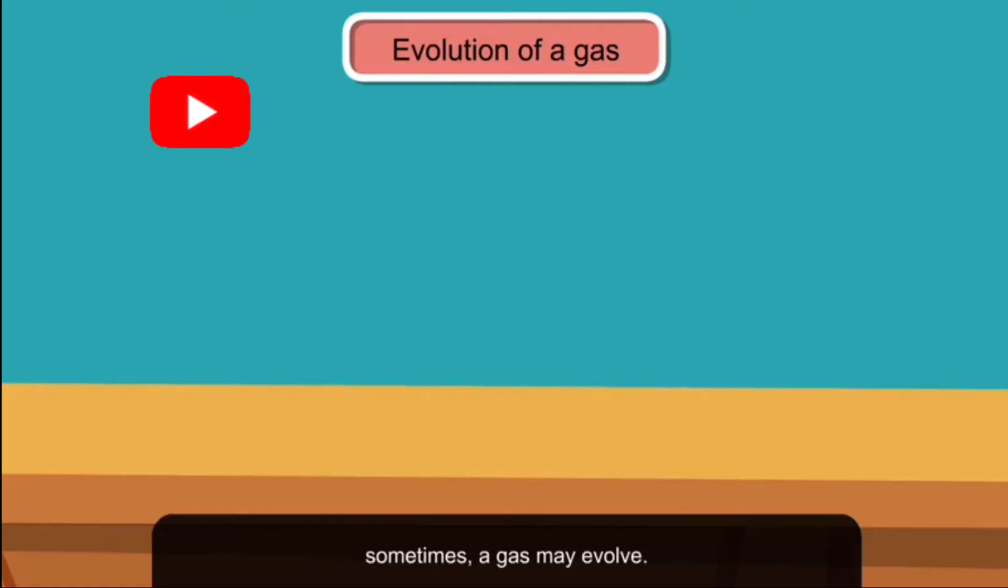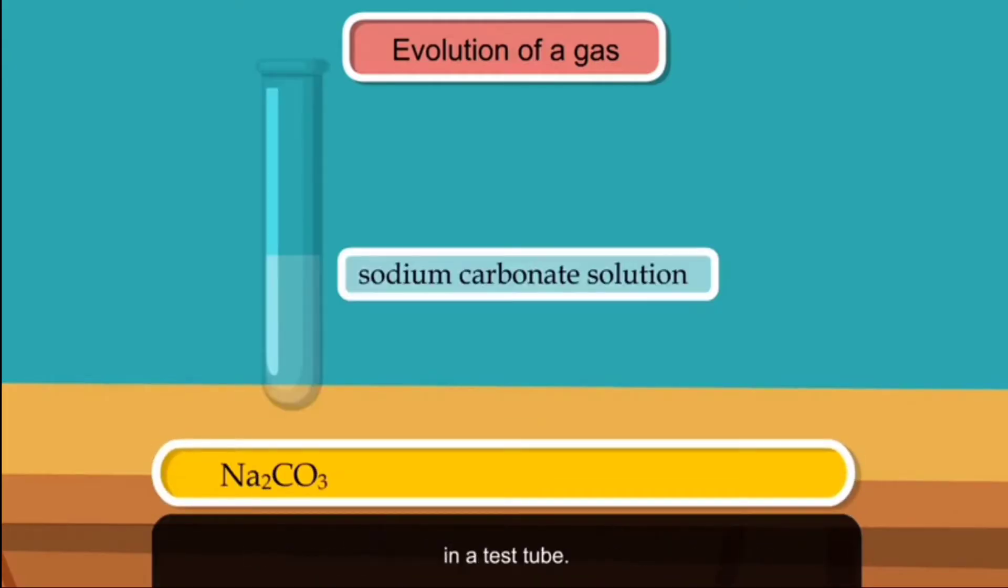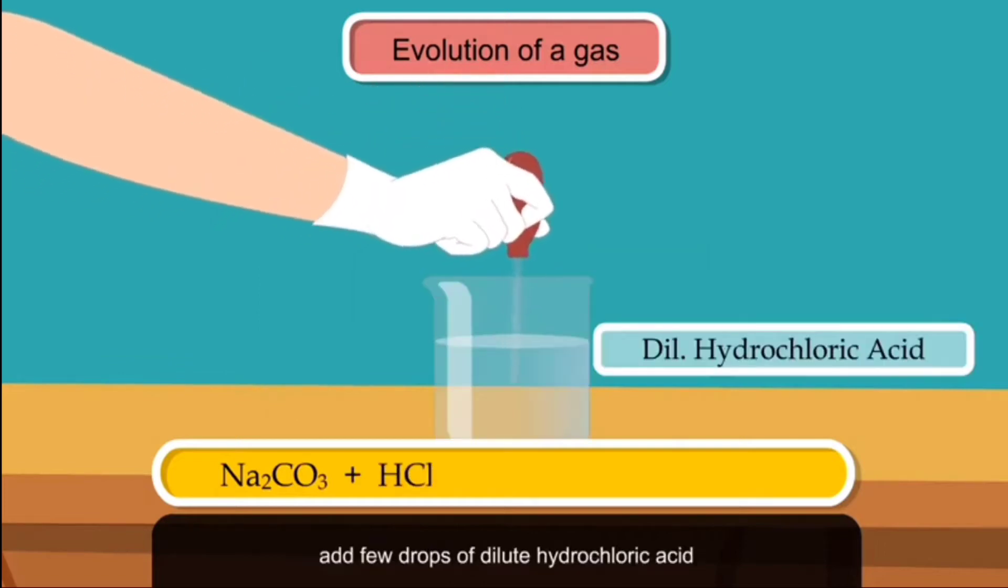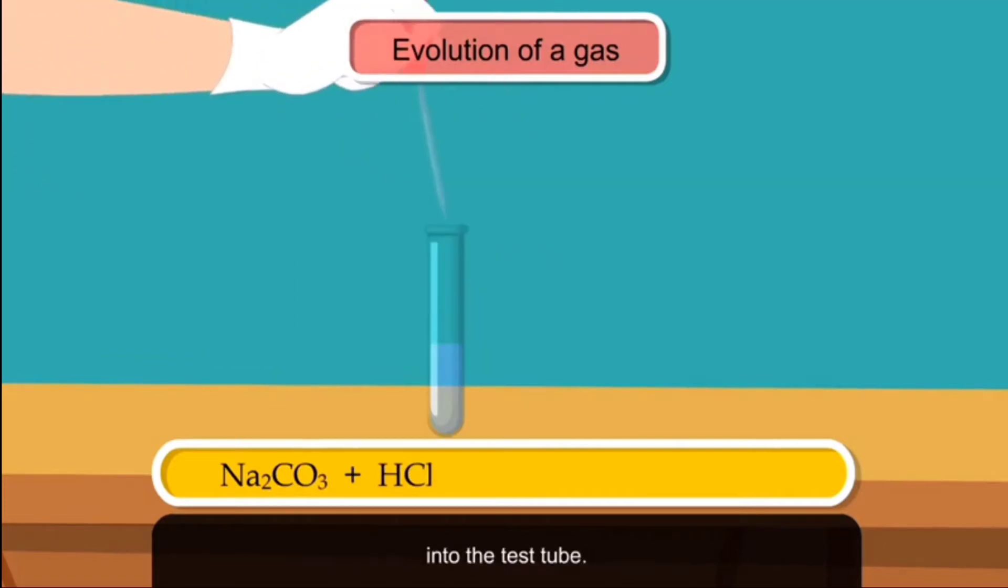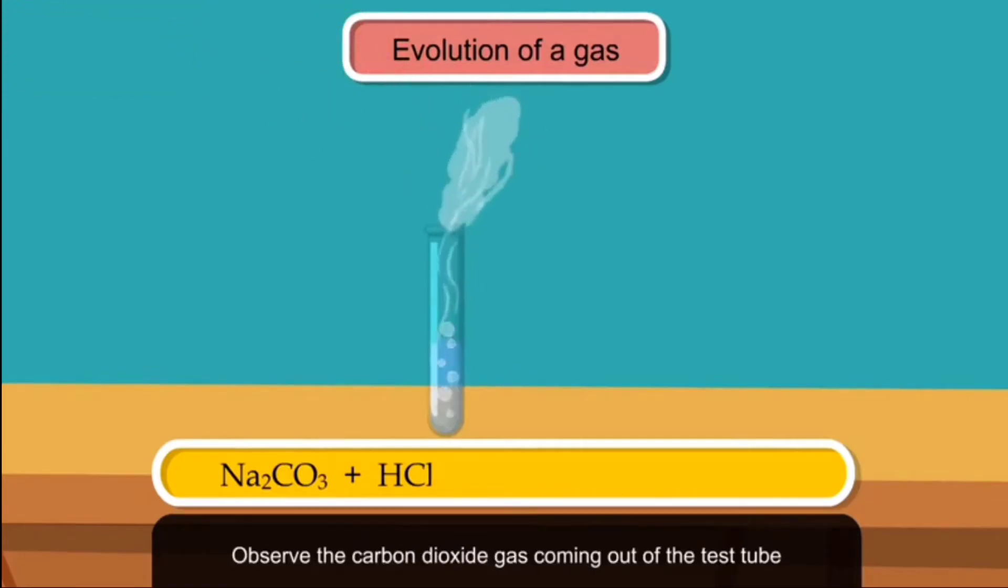For example, let's take some sodium carbonate solution in a test tube. Now, using a dropper pipette, add a few drops of dilute hydrochloric acid into the test tube. Observe the carbon dioxide gas coming out of the test tube with effervescence.